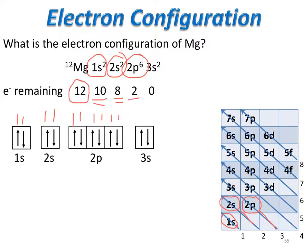That leaves us with 2 electrons. The next orbital up in the diagram is the 3s. The 3s can hold 2 electrons. We have 2 electrons remaining, so we put both in the 3s to finish our electron configuration. The way we would say this is 1s2, 2s2, 2p6, and 3s2.